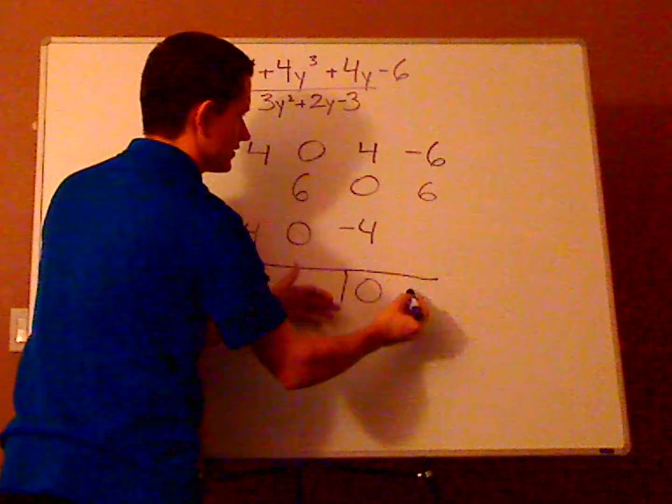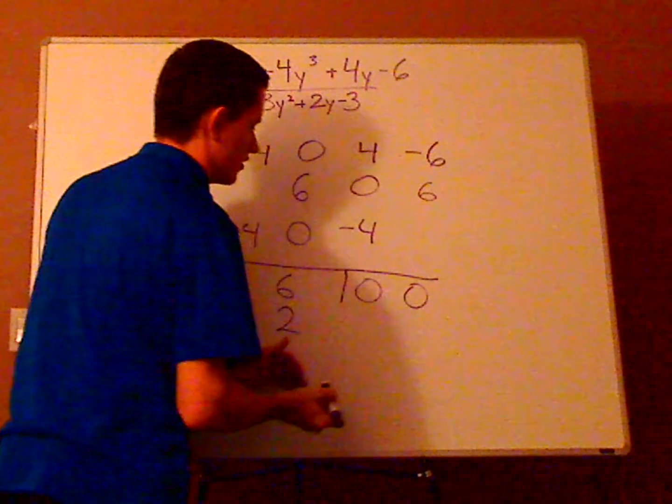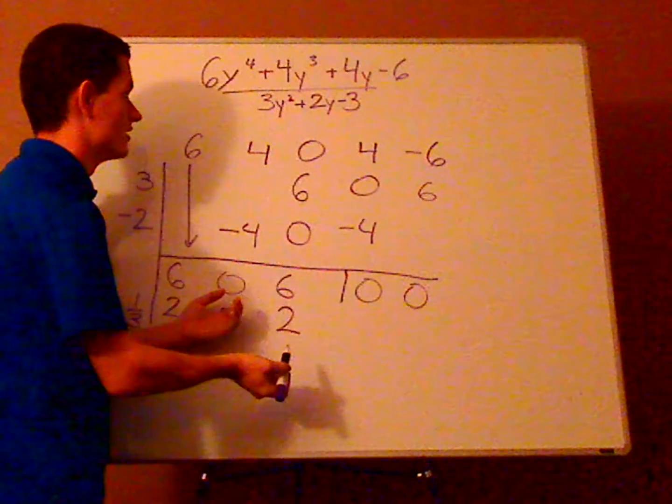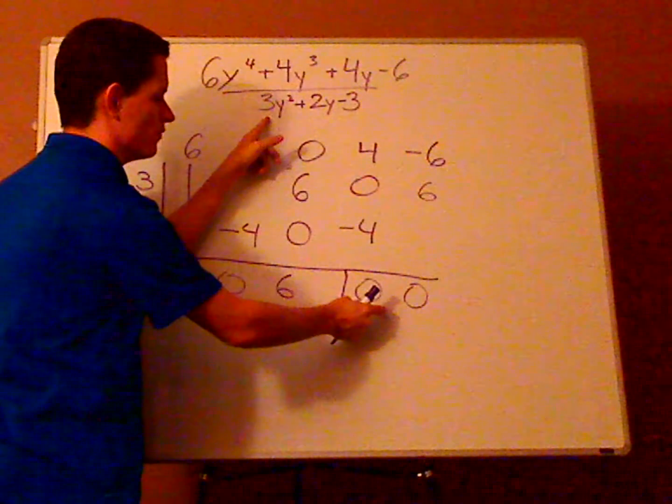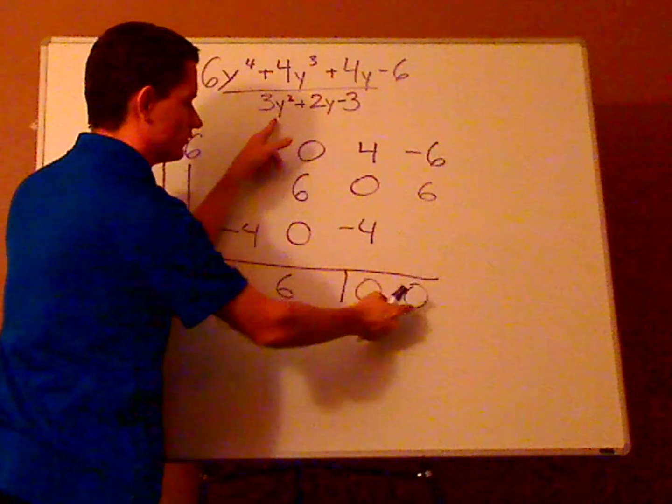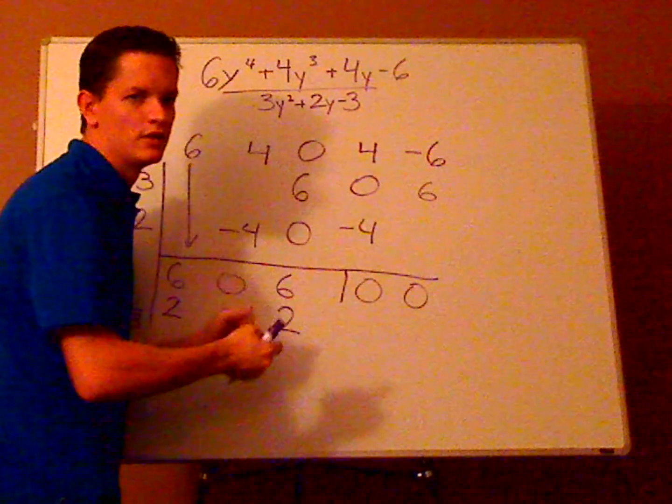Now this is going to be negative 6 plus 6 which is 0. And so the quotient is 1 less degree, or sorry, the remainder is 1 less degree. So this would be y plus the constant. Well here it's both 0, so there is no remainder.